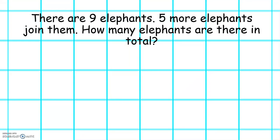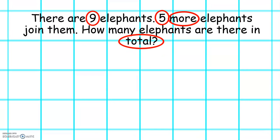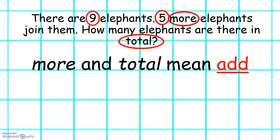Let's read this word problem. There are nine elephants. Five more elephants join them. How many elephants are there in total? The first thing we have to do is highlight the numbers in the word problem. In this word problem we can see the numbers nine and five. The next thing we have to look out for are the important words that tell us whether we have to add or subtract. In this word problem we can see the word more and we can also see the word total. More and total mean add, so for this word problem we must add.